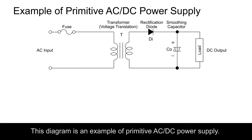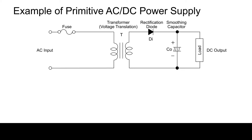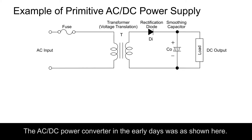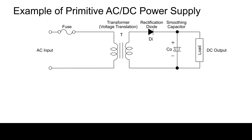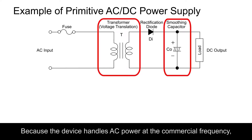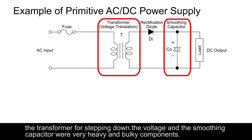This diagram is an example of a primitive AC-DC power supply. The AC-DC power converter in the early days was as shown here. Because the device handles AC power at the commercial frequency, the transformer for stepping down the voltage and the smoothing capacitor were very heavy and bulky components.